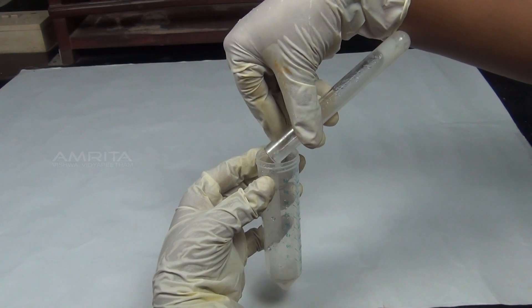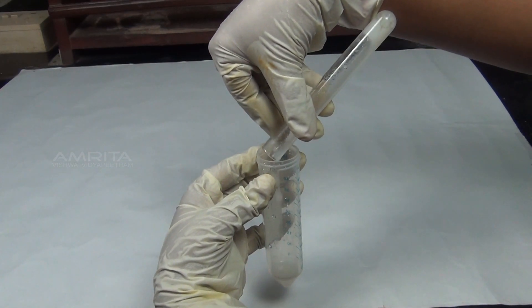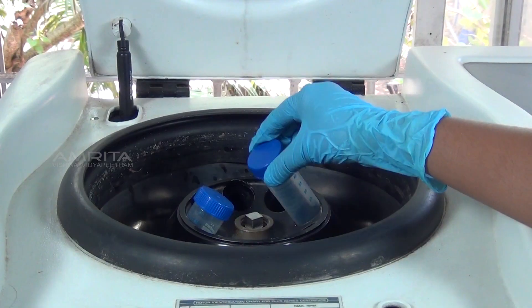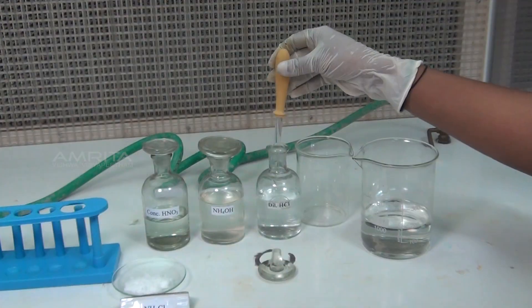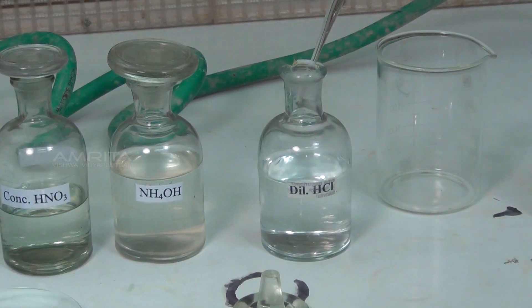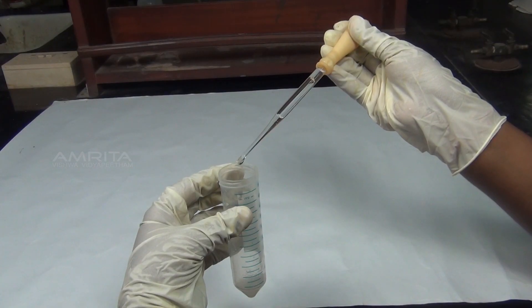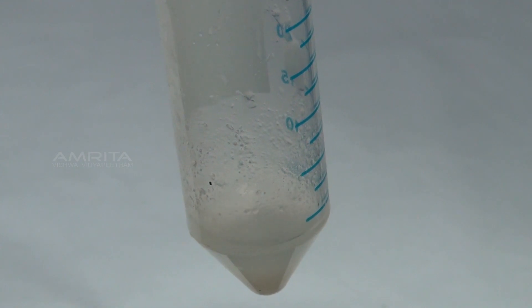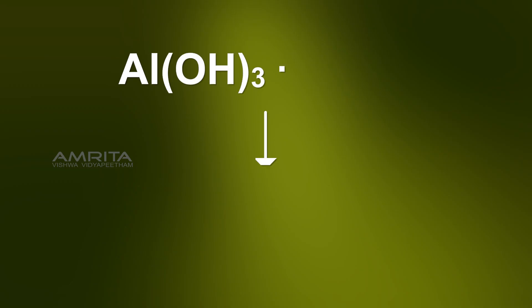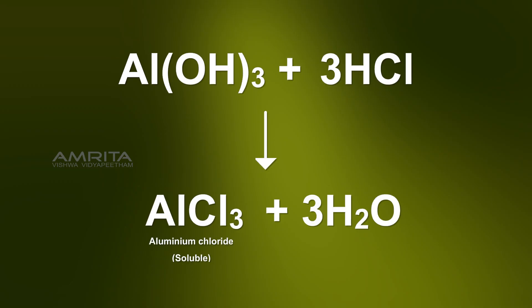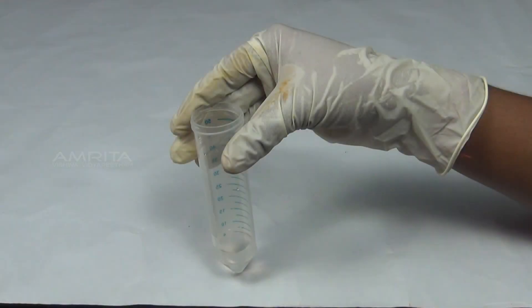Transfer the precipitate into a centrifuge tube to separate it by centrifugation. Now add dilute hydrochloric acid to the precipitate and shake. The precipitate dissolves in hydrochloric acid due to the formation of soluble aluminium chloride.